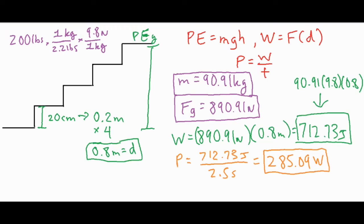That's basically it as far as calculating your own power going up the stairs. In addition to that, you can also calculate your horsepower. How you do that is you just do one more conversion because there's 746 watts is equivalent to one horsepower.